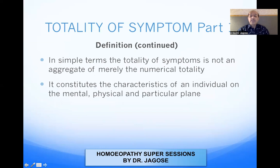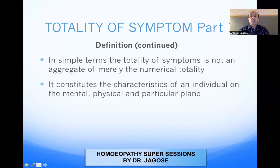In simple terms, the totality of symptoms is not an aggregate of merely the numerical totality — meaning all the symptoms of the case. It constitutes the characteristics of an individual on the mental, physical, and particular plane. From all the symptoms, we have to decipher which symptoms are PQRS — characteristic, singular, uncommon, rare, peculiar, queer, or strange — on the mental level, physical level, as well as the particular plane. In short, the totality of symptoms is the characteristic symptoms of an individual on the mental, physical, and particular plane.